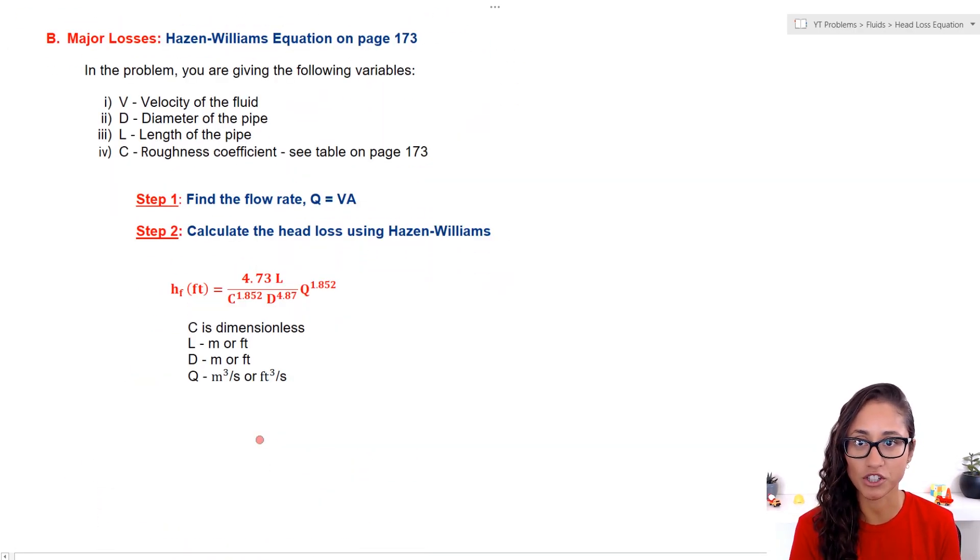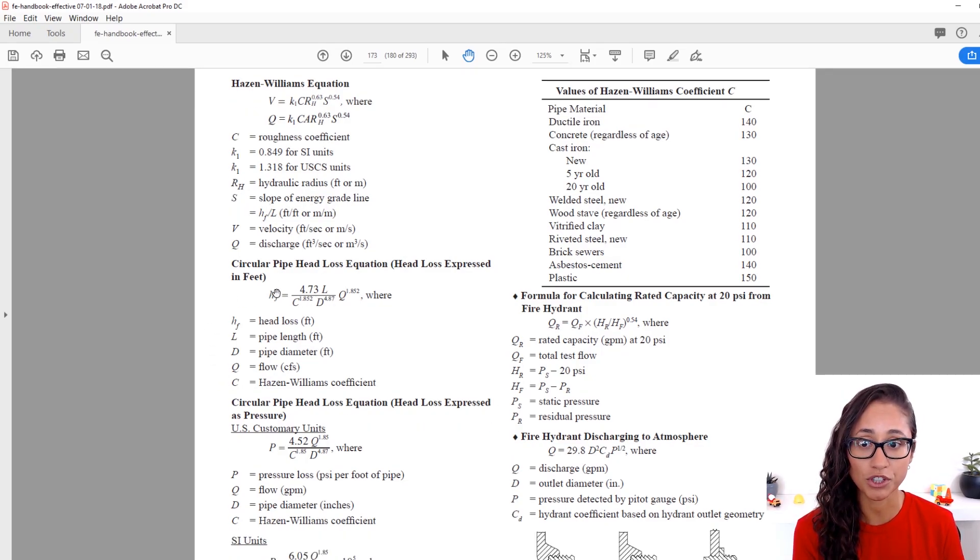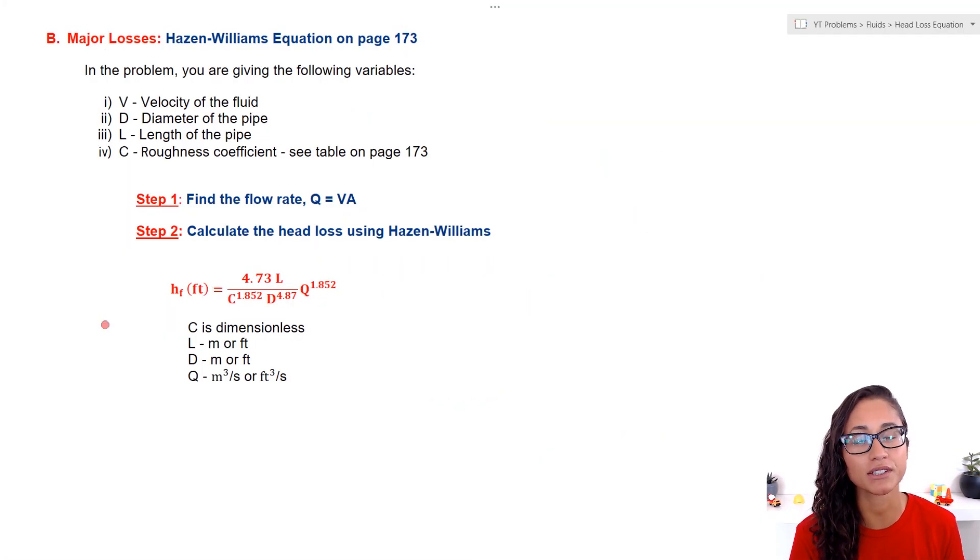The head loss equation for Hazen-Williams is provided to you on the reference manual, but it is not under fluid mechanics. It's actually under hydrology and hydraulics. Here, you are given the equation for head loss using Hazen-Williams. On this table, you are also provided the roughness coefficient.